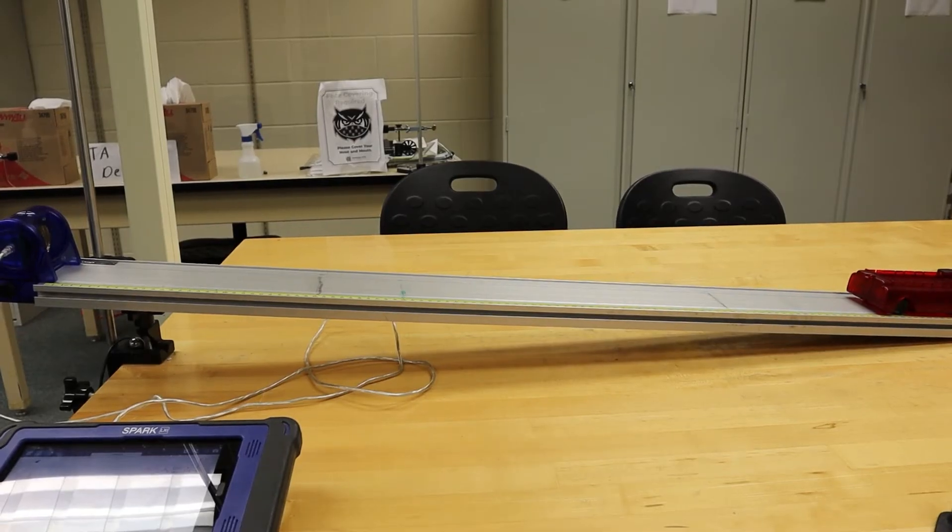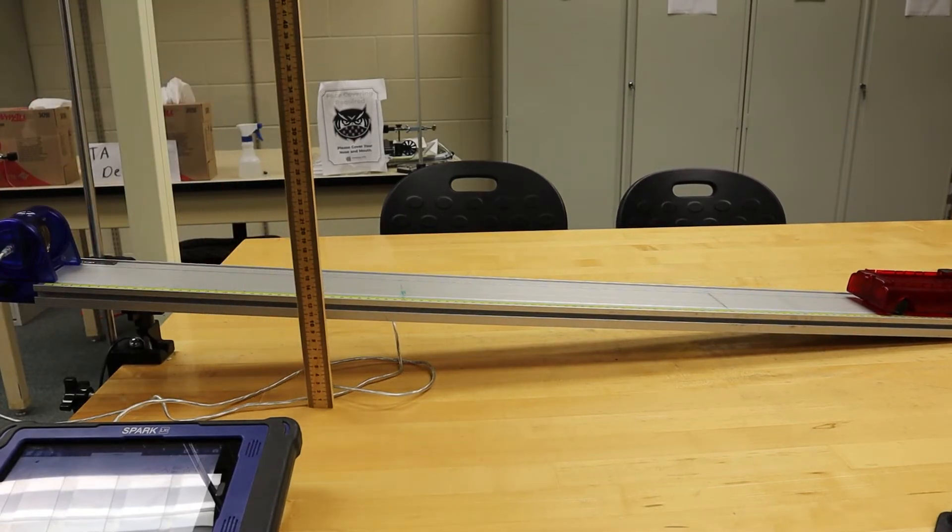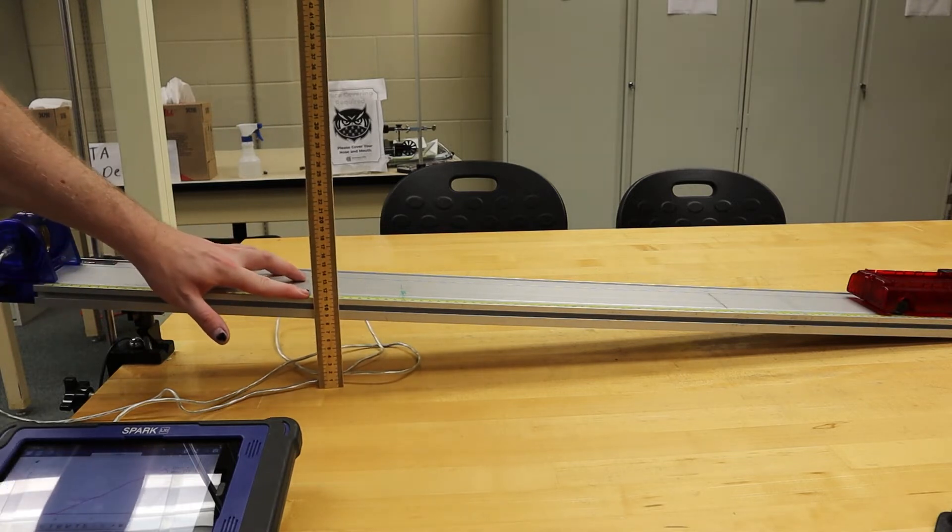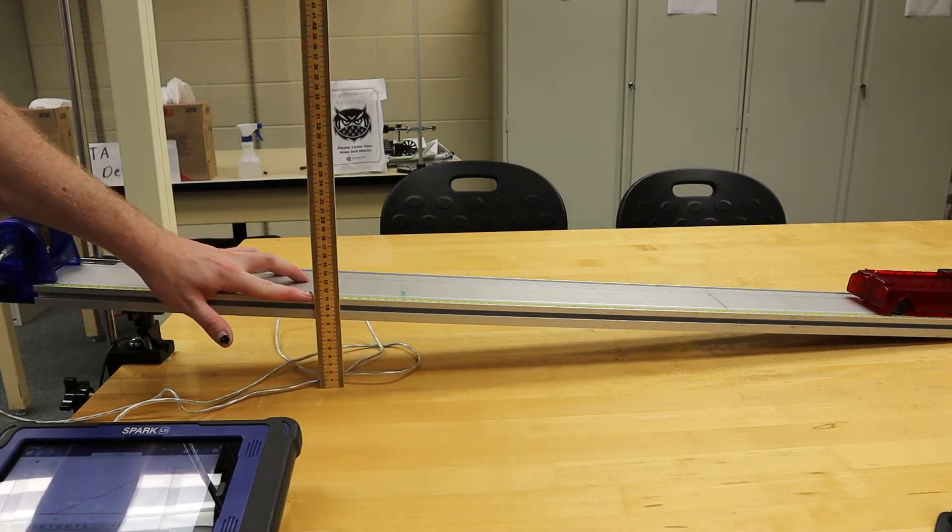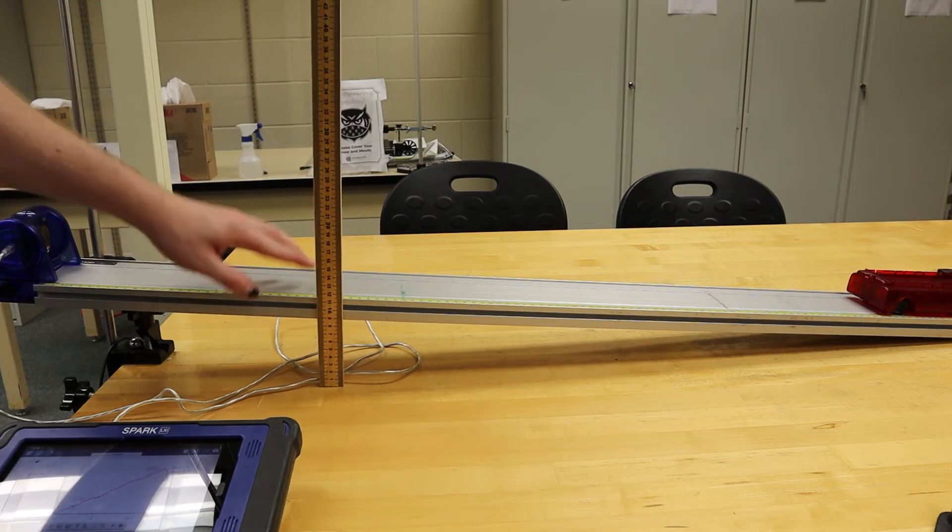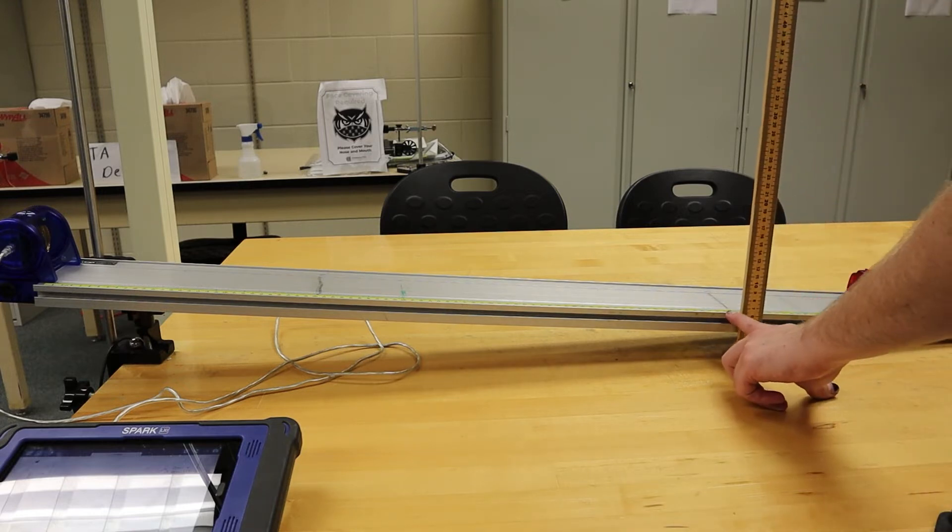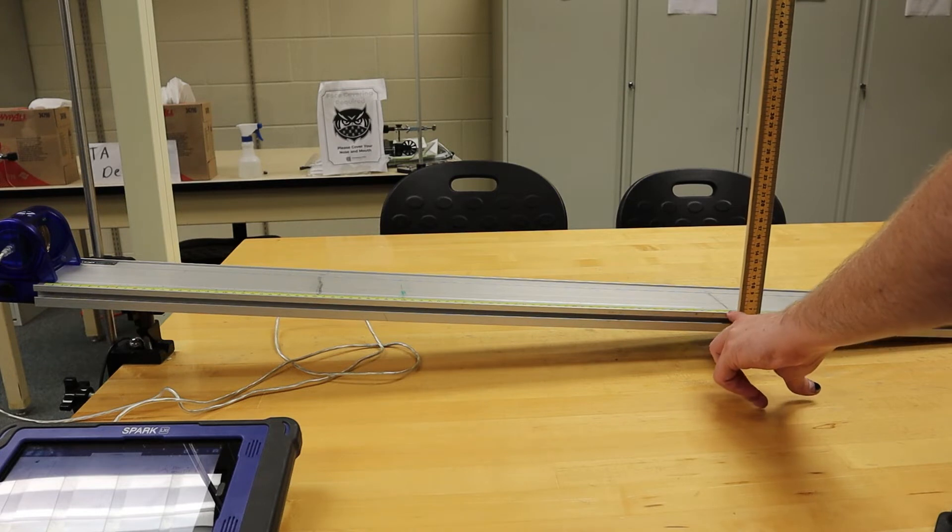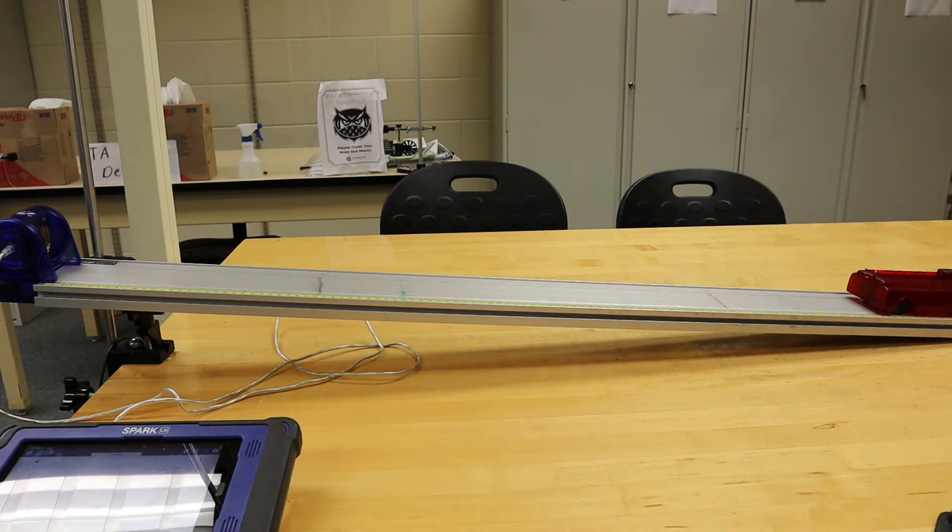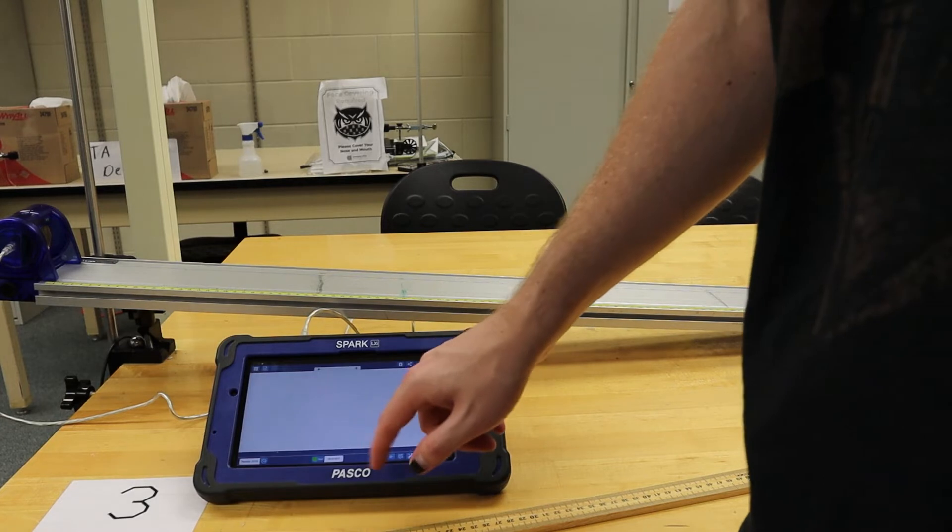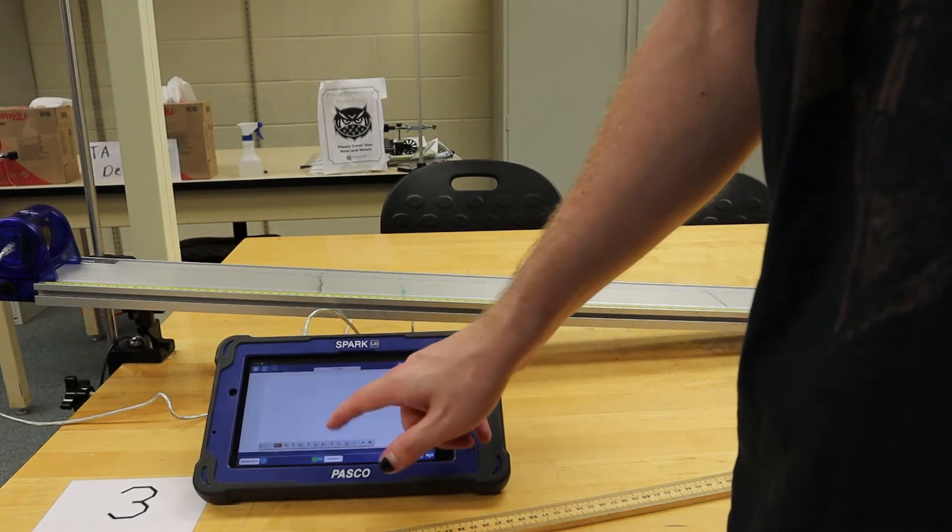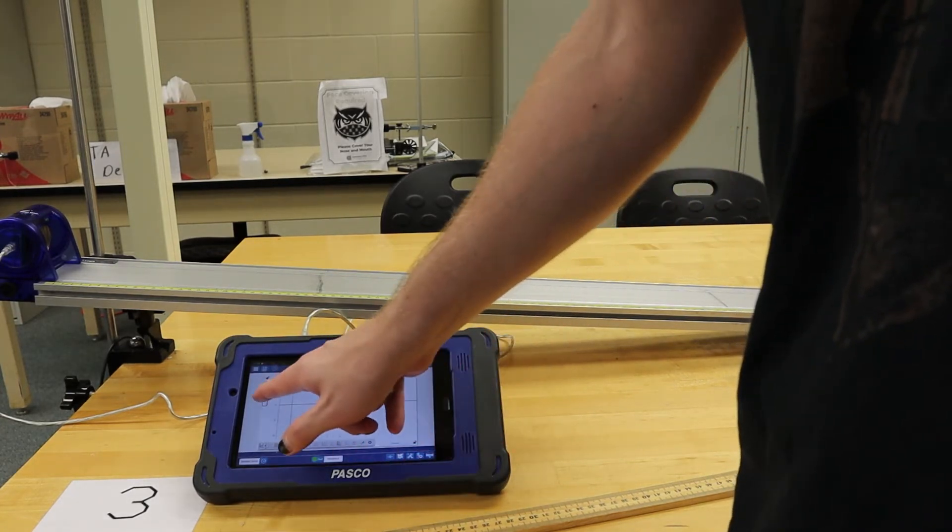Now we are ready to start Procedure A. We will begin by measuring the height from the table to the top of our track at both the 80 and 30 centimeter marks. Once we have these heights recorded, we will then set up the LXI to start taking data. Please refer to the LXI video for step-by-step instructions.